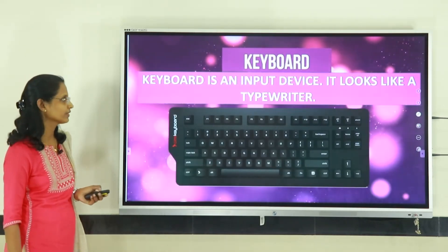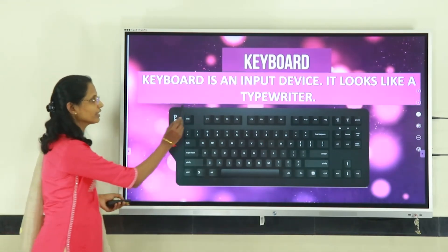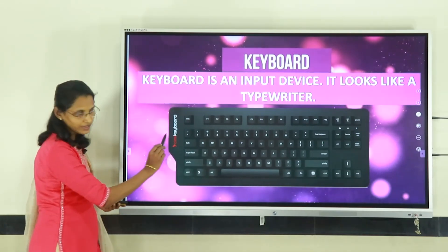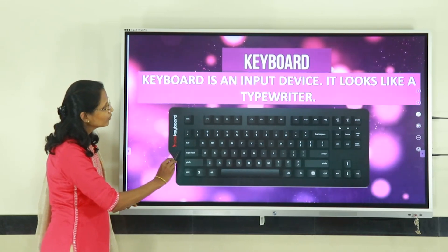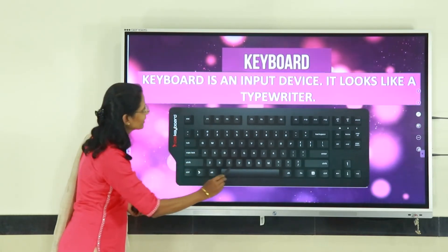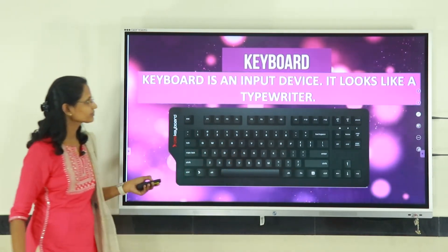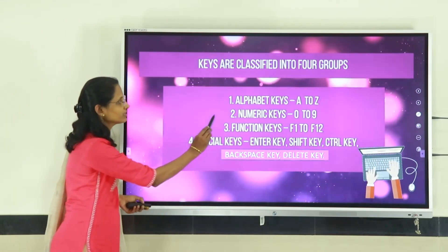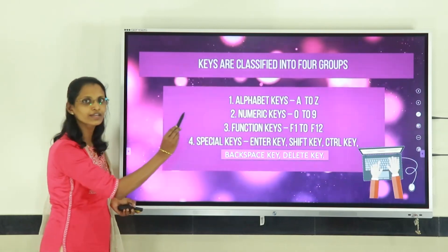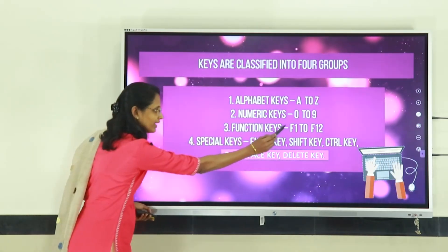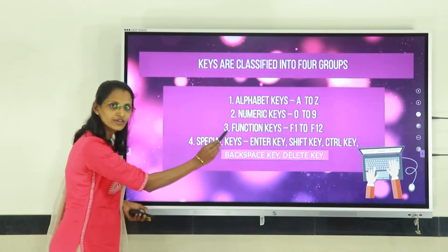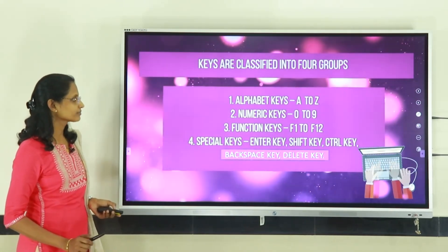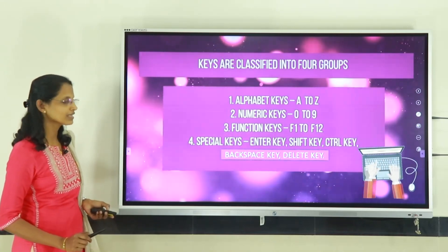The first device is the keyboard. What is a keyboard? Keyboard is an input device; it looks like a typewriter. The keyboard has small buttons called keys. The keys are classified into four groups: alphabet keys from A to Z, numeric keys from 0 to 9, function keys from F1 to F12, and special keys such as Enter, Shift, Control, Backspace, and Delete.